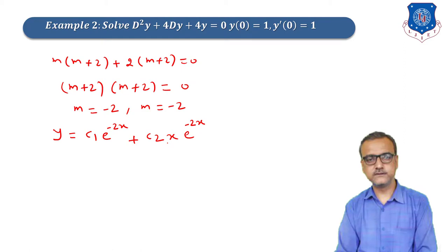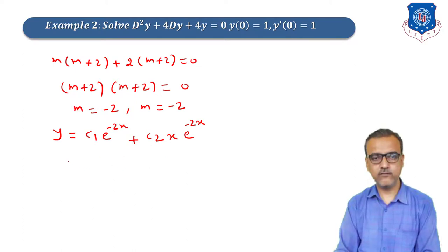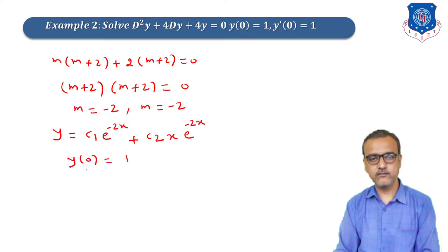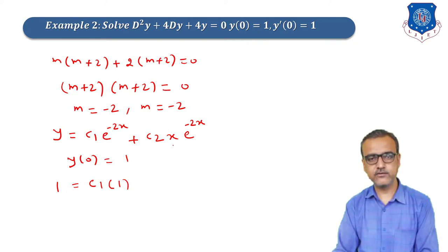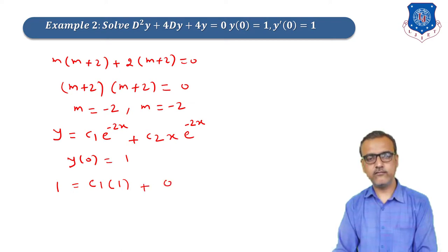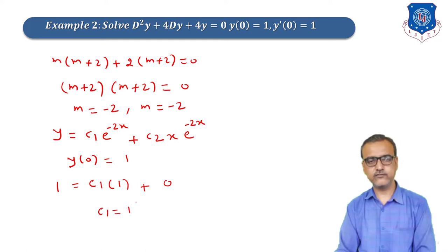Now based on the initial conditions y(0) = 1 and y'(0) = 1, we find c₁ and c₂. The condition y(0) = 1 means when x = 0, y = 1. Substituting x = 0 into the general solution: 1 = c₁e⁰ + c₂(0)e⁰ = c₁·1 + 0, so c₁ = 1.